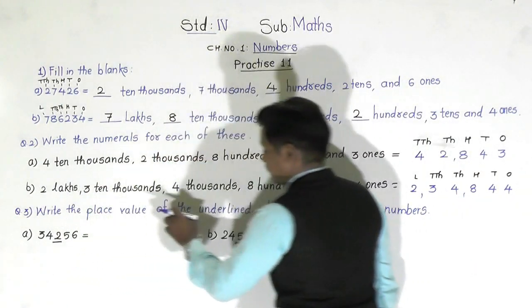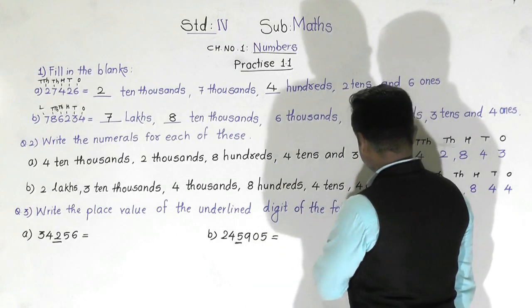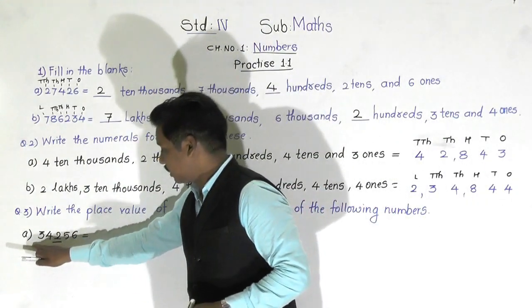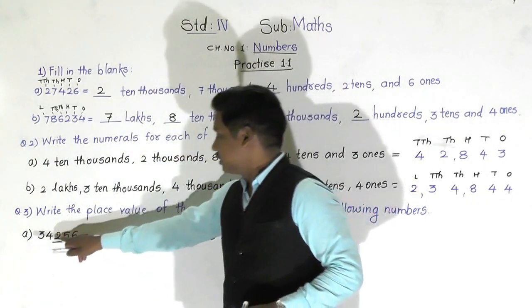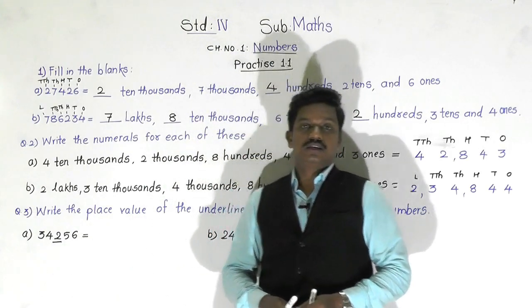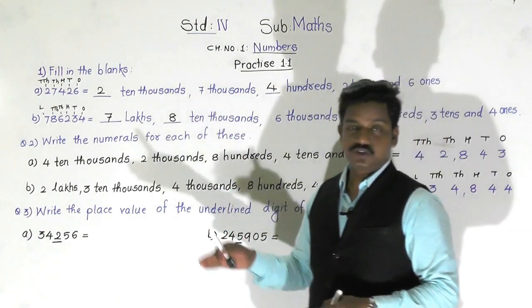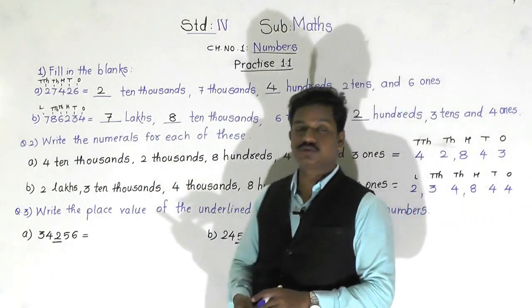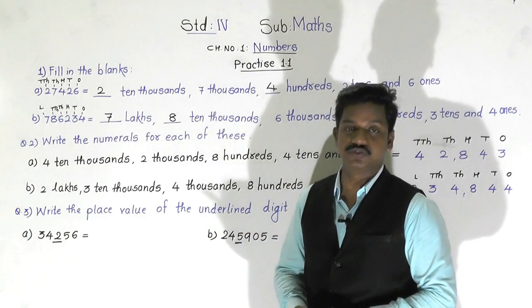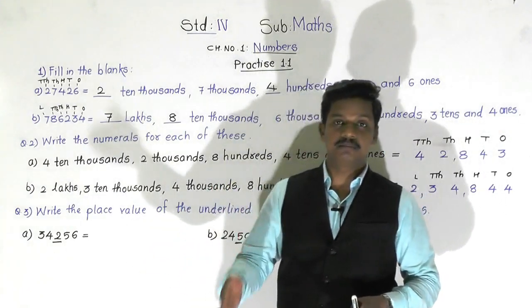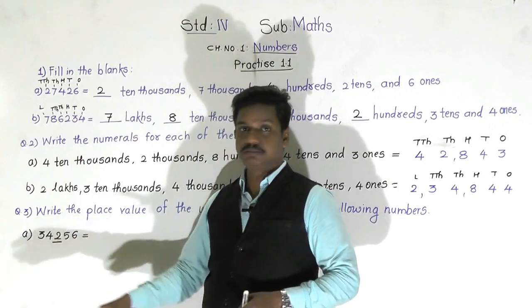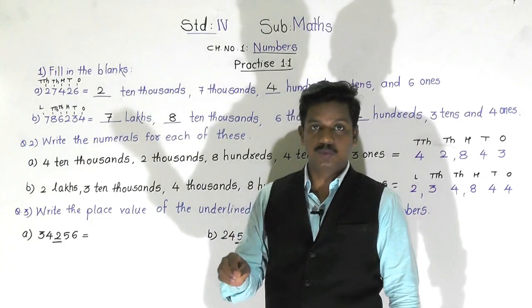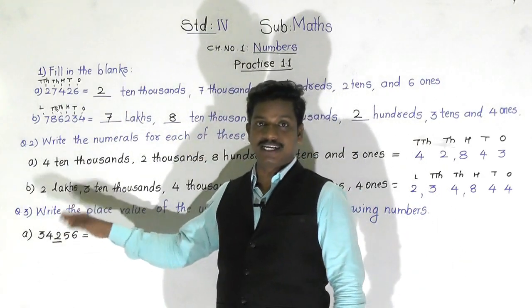Question three: write the place value of the underlined digit of the following numbers. In the number thirty-four thousand two hundred fifty-six, the digit two is underlined. We have to write the place value of two. Place value is obtained by multiplying the given digit by its place, so we need to multiply two by its place.